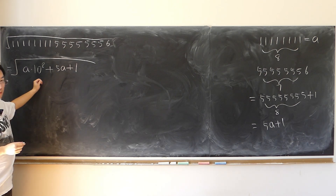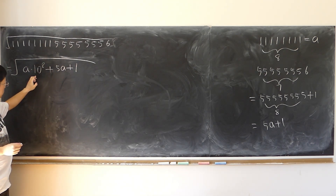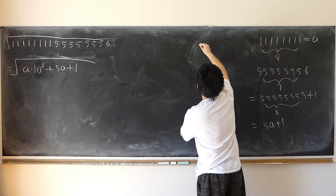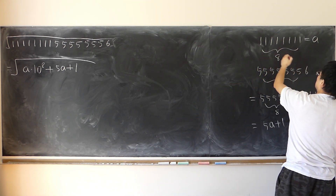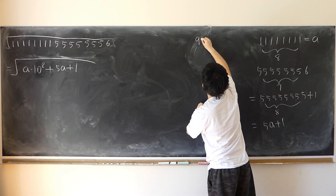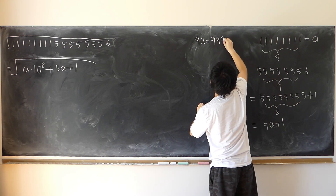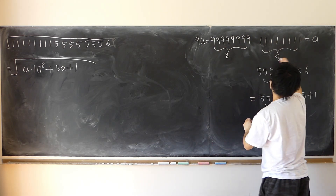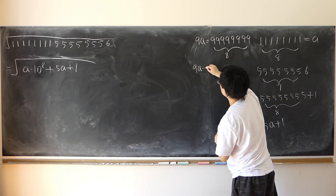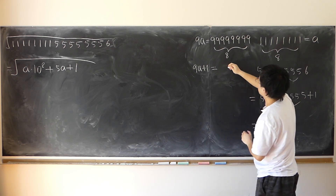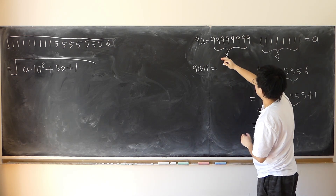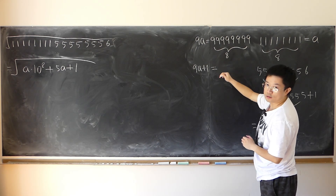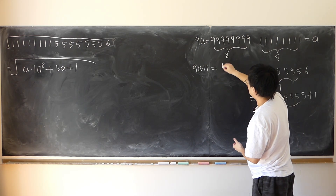This is still not simplified enough — we have to simplify ten to the power of eight and represent it in terms of A. If this number times nine gives eight 9s — still eight digits — and if I just add one, that automatically gives me one followed by eight zeros, which is exactly ten to the power of eight.